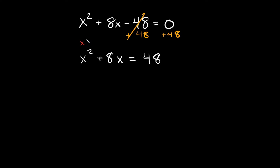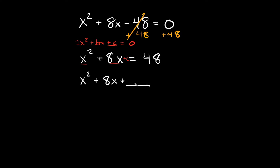Remember the quadratic equation is x² + bx + c = 0. We have a leading coefficient of 1, we have our bx, but we're missing the plus c part. So we're going to rewrite our equation as x² + 8x + ___ = 48 + ___, leaving a space for the constant we need to find. Whatever you add to one side you must add to the other.